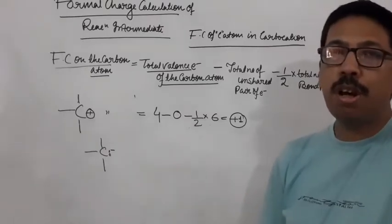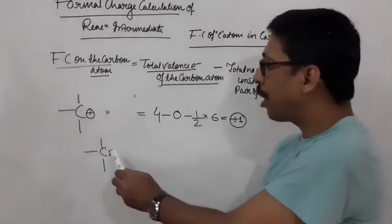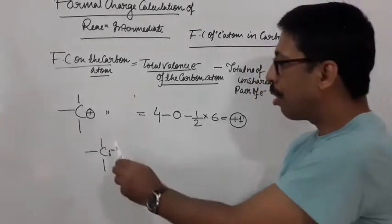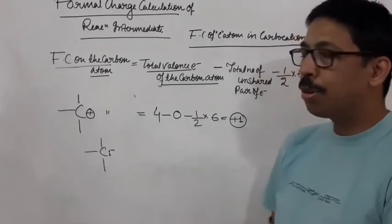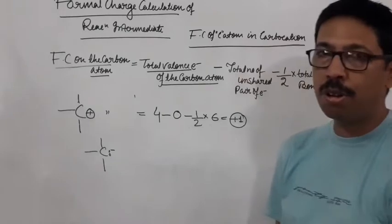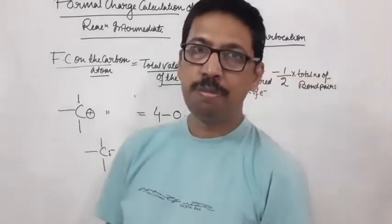One unit negative charge. This carbon has electron, not electron deficiency, because two electrons means total eight electrons on carbon.